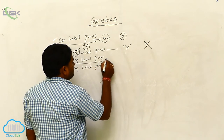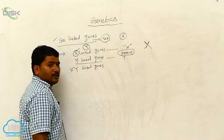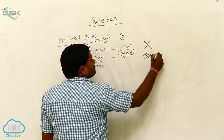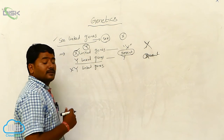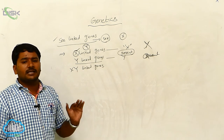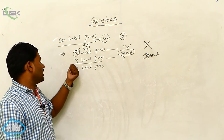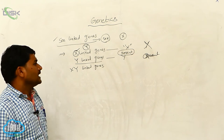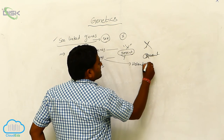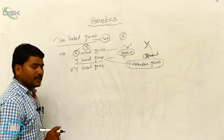Y-linked genes: the genes present on the Y chromosome and absent on the X chromosome are called Y-linked genes. The genes which are present on the Y sex chromosome and absent on the X chromosome are called Y-linked genes. Y-linked genes are also called holandric genes.